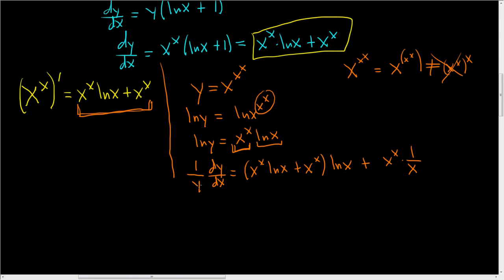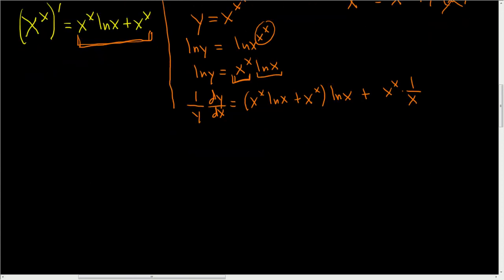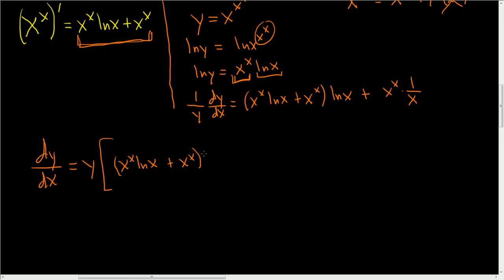To finish, we'll multiply everything by y, so we end up with dy/dx equals y times the bracket: x to the x times natural log of x, plus x to the x, all multiplied by the natural log of x, plus x to the x times 1 over x, which simplifies to x to the x minus 1.